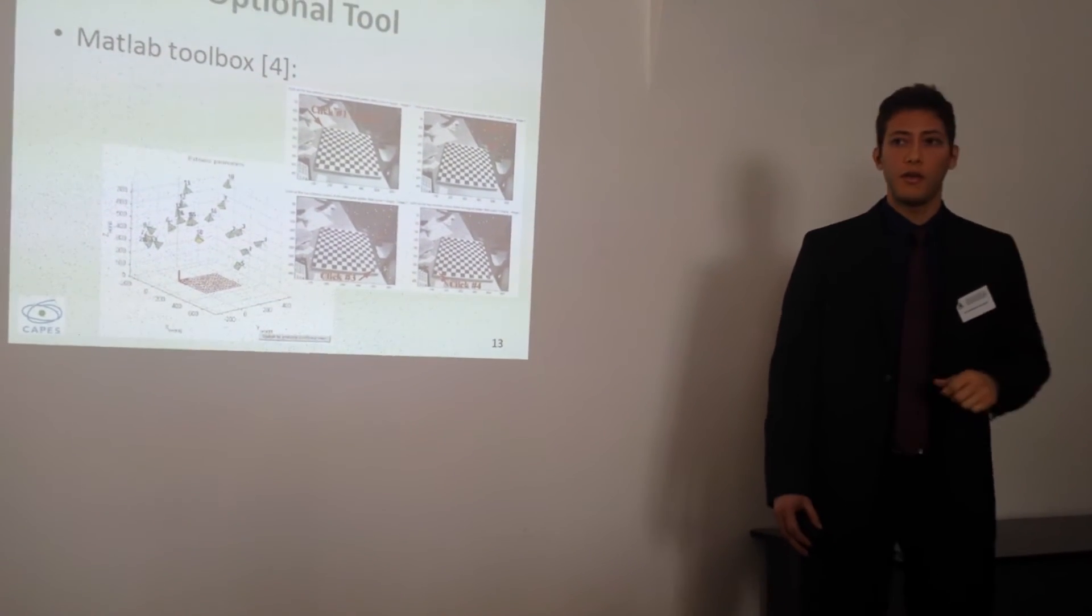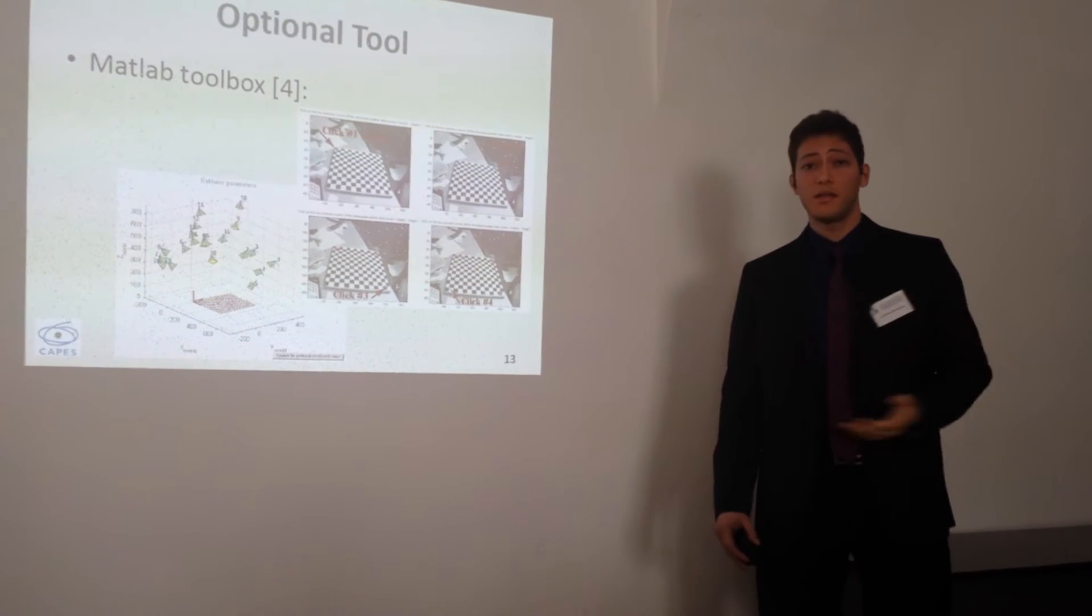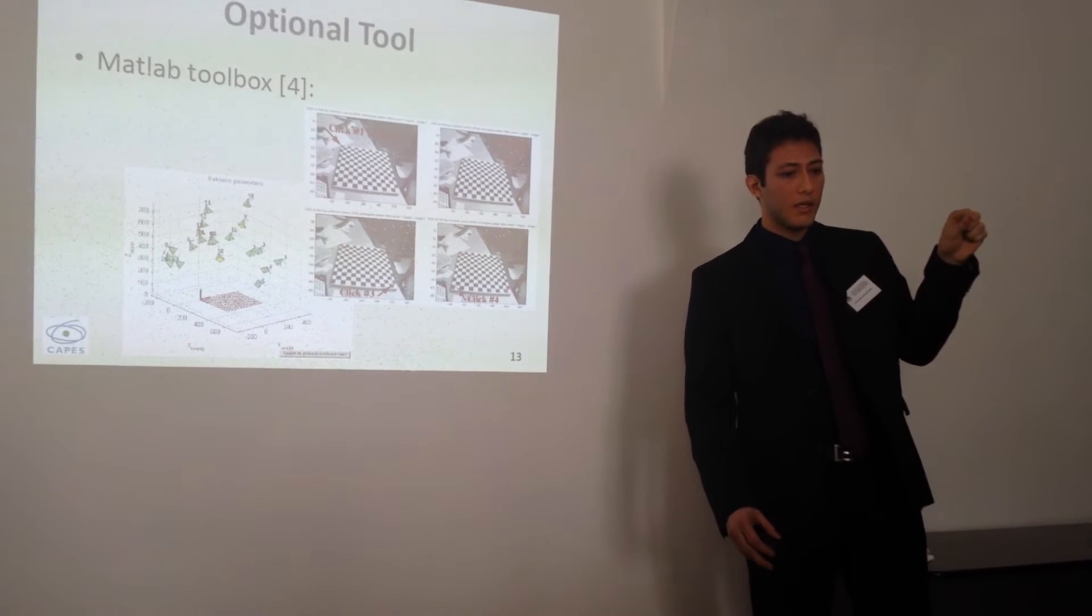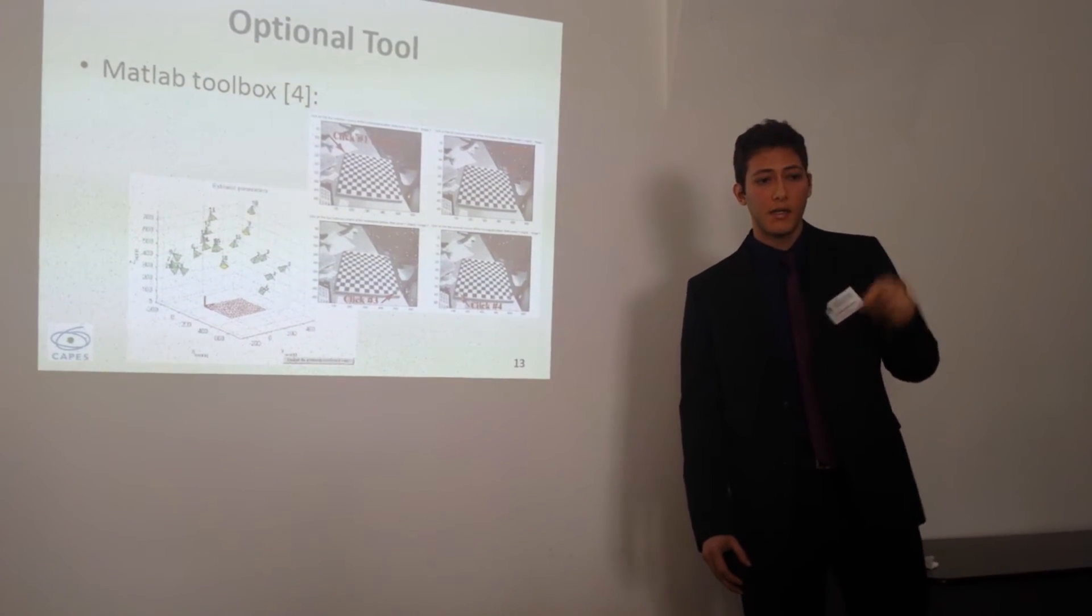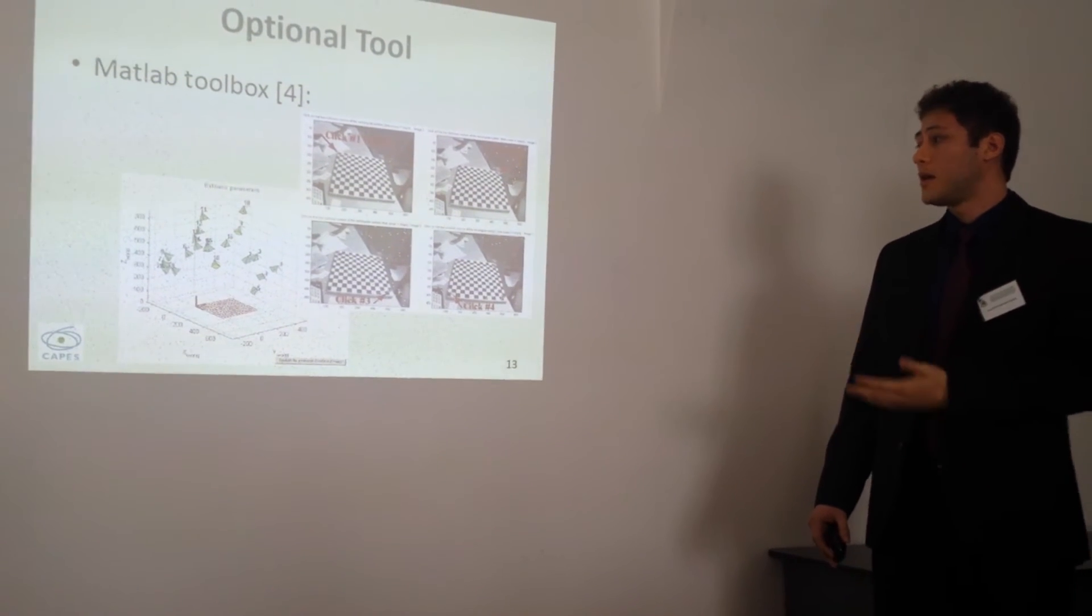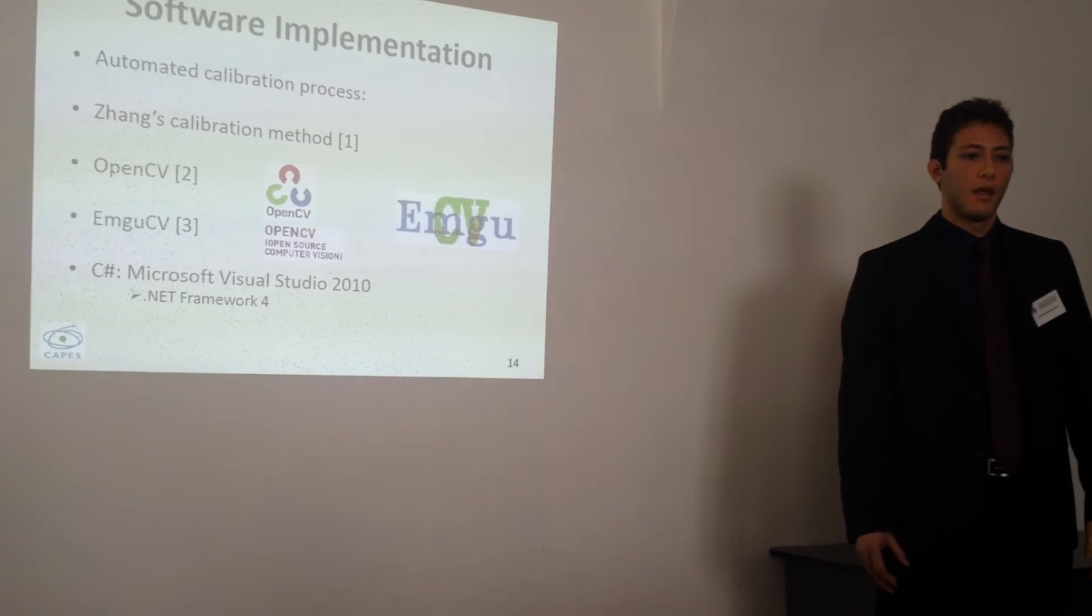Basically, to make a calibration of a camera you use a pattern, a chessboard corner. A chessboard is very simple because you know the exact points of the corners, so you can use anything, but in this example I have used a chessboard.